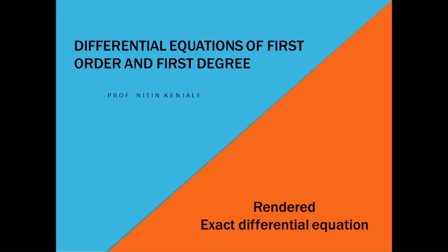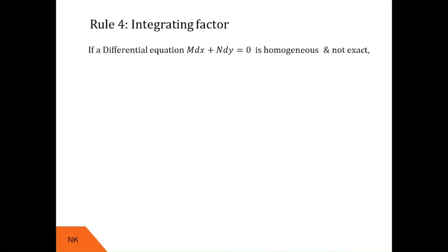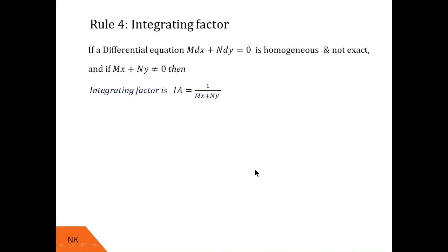You can find the link of those videos in the description box. So, let us see what this fourth technique tells us. It says that if a differential equation M dx plus N dy equals 0 is homogeneous and not exact, and if mx plus ny is not equal to 0, then the corresponding integrating factor is given by 1 upon mx plus ny.